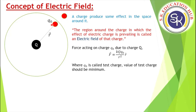So here, q0 is called the test charge. The meaning of test charge is: to check the electric field of capital Q, to test it, we place a small charge there. That is why this charge is called q0. The value of q0 should be very small — it should be the minimum.